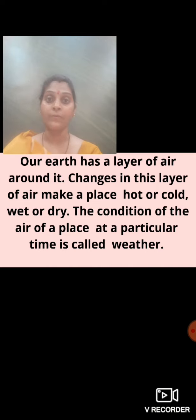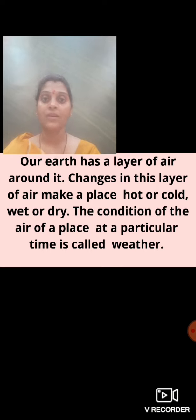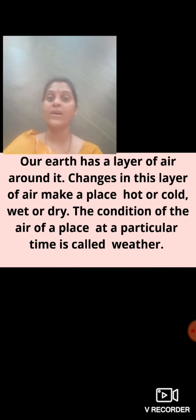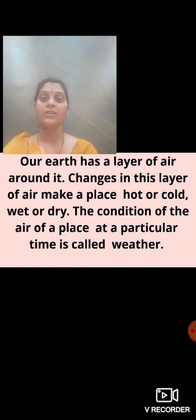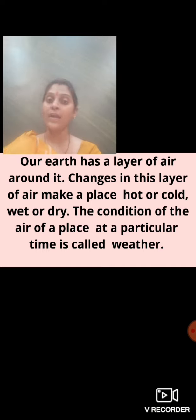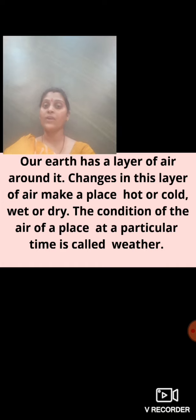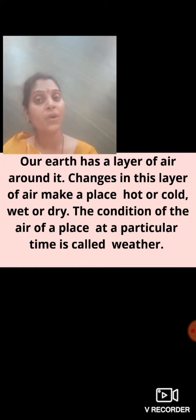Now, what is weather? There is a layer of air around our earth. The changes in the layer of air make it somewhere hot or cold, wet and dry. Depending upon the changes in the conditions of the air, for a particular time, if that condition of the air is the same for that place, it is known as the weather.